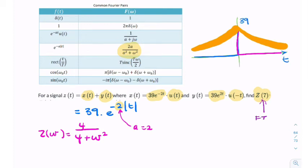Except we are told that omega equals 7. So we can replace omega here with 7. So we can say z of 7 equals 4 over 4 plus 7 squared. So that's 4 over 53. And you can calculate that. And that is your final answer.